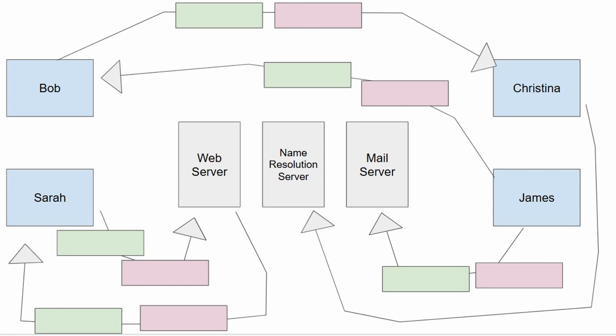Welcome to this performance-based question for your A+ 1201 examination. Our goal is going to be to fill out this diagram with the correct protocol and the correct port number for each of the following tasks that these individuals need to complete. We will be given a written set of requirements that Bob, Christina, James, and Sarah all need to complete in relation to sending files, controlling desktops, or interacting with servers.